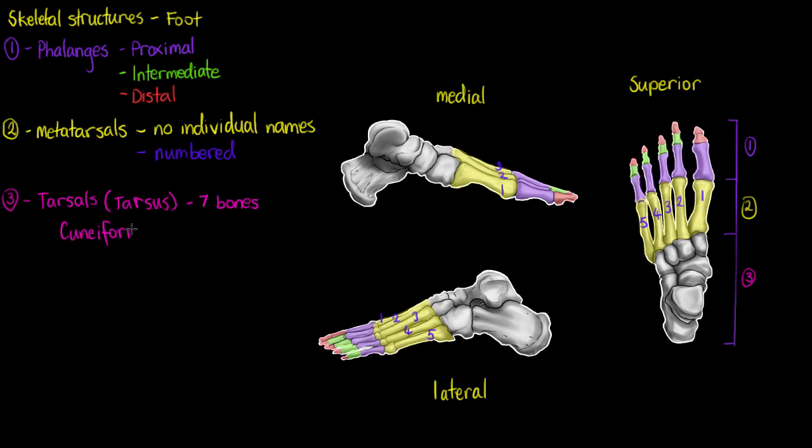So the first one is going to be our cuneiform bones. Our cuneiform, just to make naming easier, we divide it into 3 segments. The medial cuneiform, which I'm just outlining here. So we see our medial cuneiform on the medial side. We'll also see it from our superior view here. And we're not going to see that one on the lateral side.